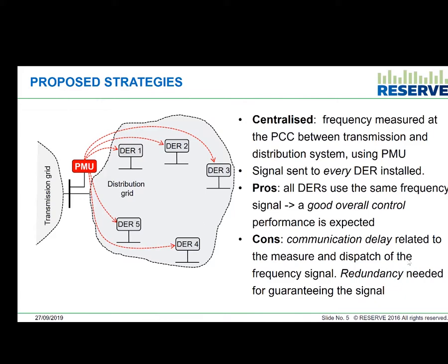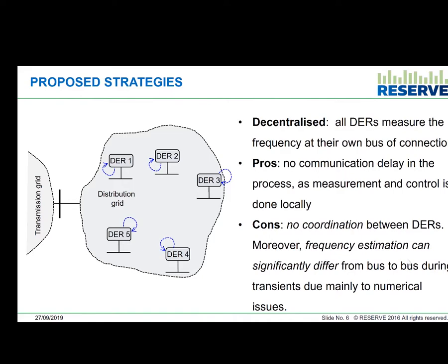The second strategy is the decentralized one. In this case, all measurements are made locally — every distributed energy resource has its own measurement at that point. There is no communication delay, because we use the measurement made exactly at that place. However, there is no coordination between the distributed energy resources installed in the distribution system, and the frequency estimation can vary node by node due to the different properties of the network, and due to numerical issues in the tools used for estimating the frequency.